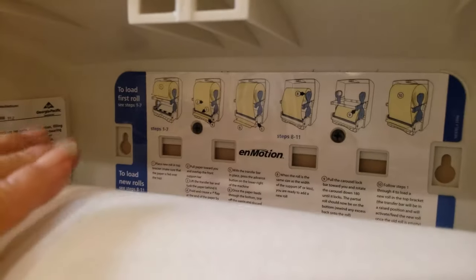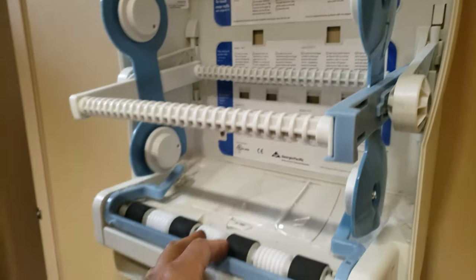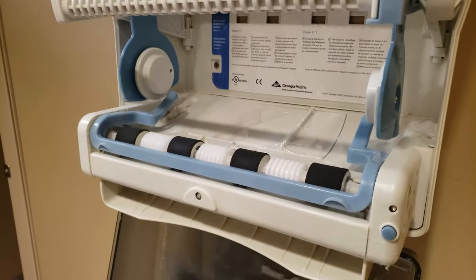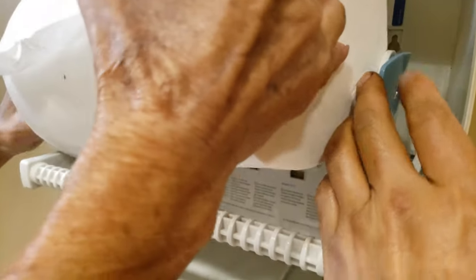There are some instructions right here. Simply remove it from the roll and pull out the rest. Now we're going to insert the new roll, guided along the two rollers so it's centered.